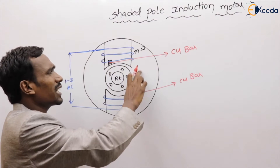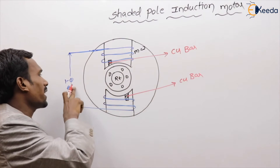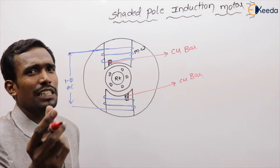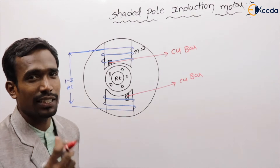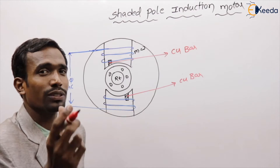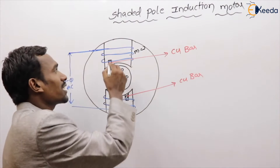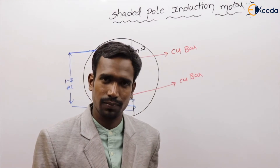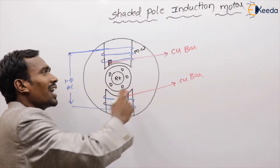Generally this is also a single phase induction motor. Single phase induction motors are not self-starting motors. How can we start single phase induction motors? By using auxiliary winding. Here the shaded rings are the auxiliary windings. By using this auxiliary winding we can start this motor.